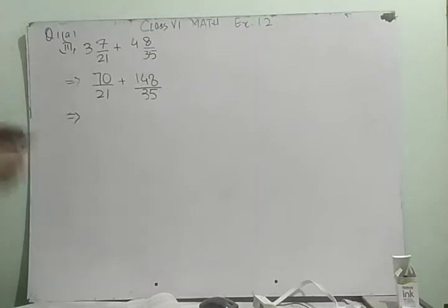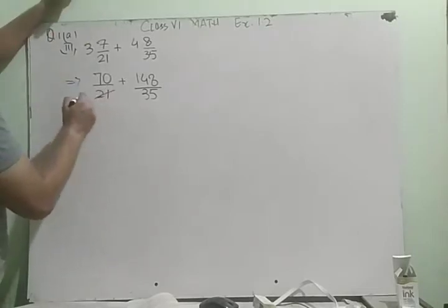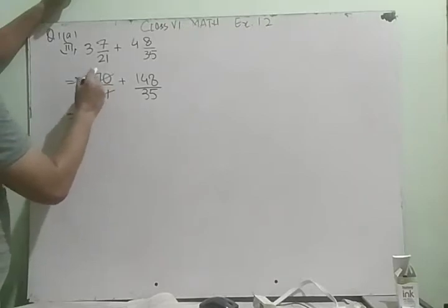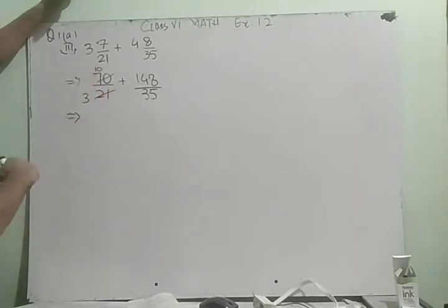Okay students? Now, if you look at the numerator and denominator, we can cancel it. We have 7 in 21 and 7 in 70. Okay students?